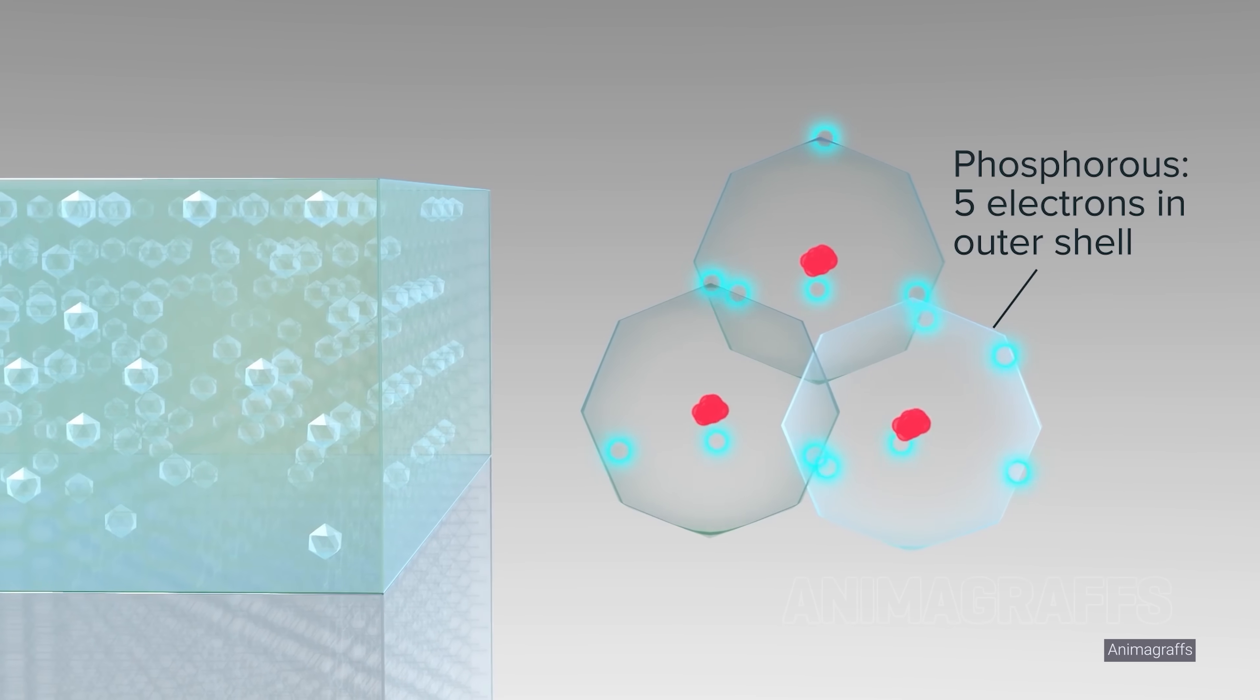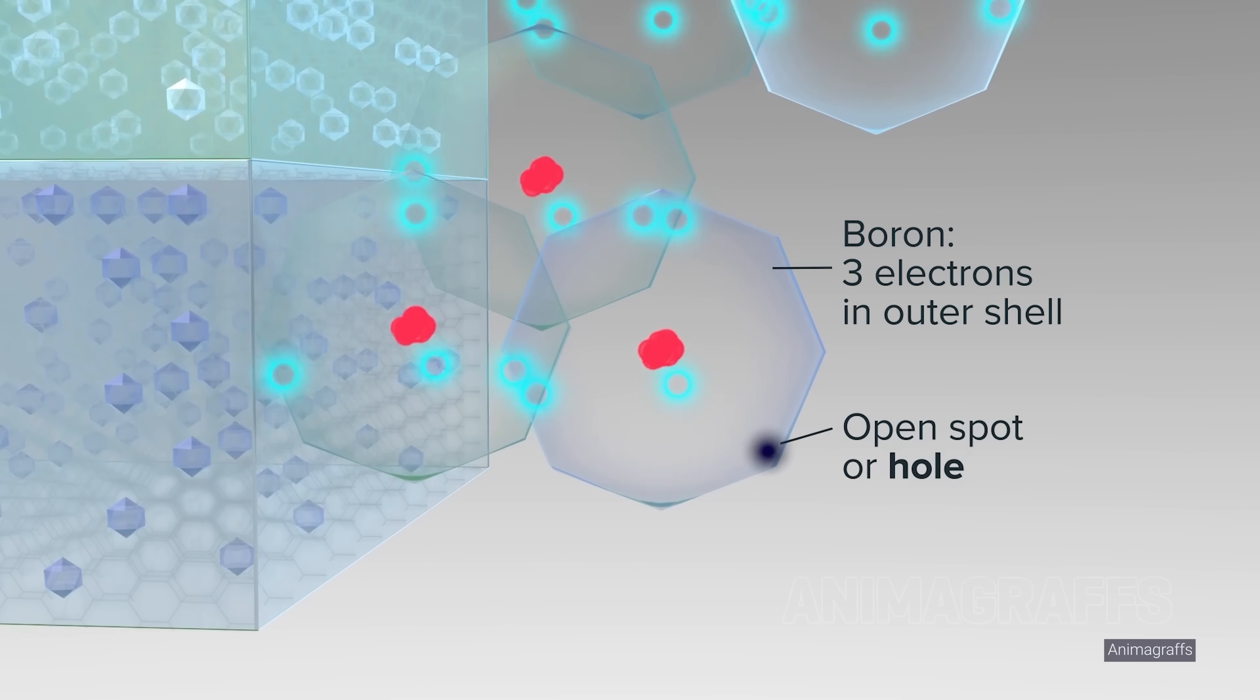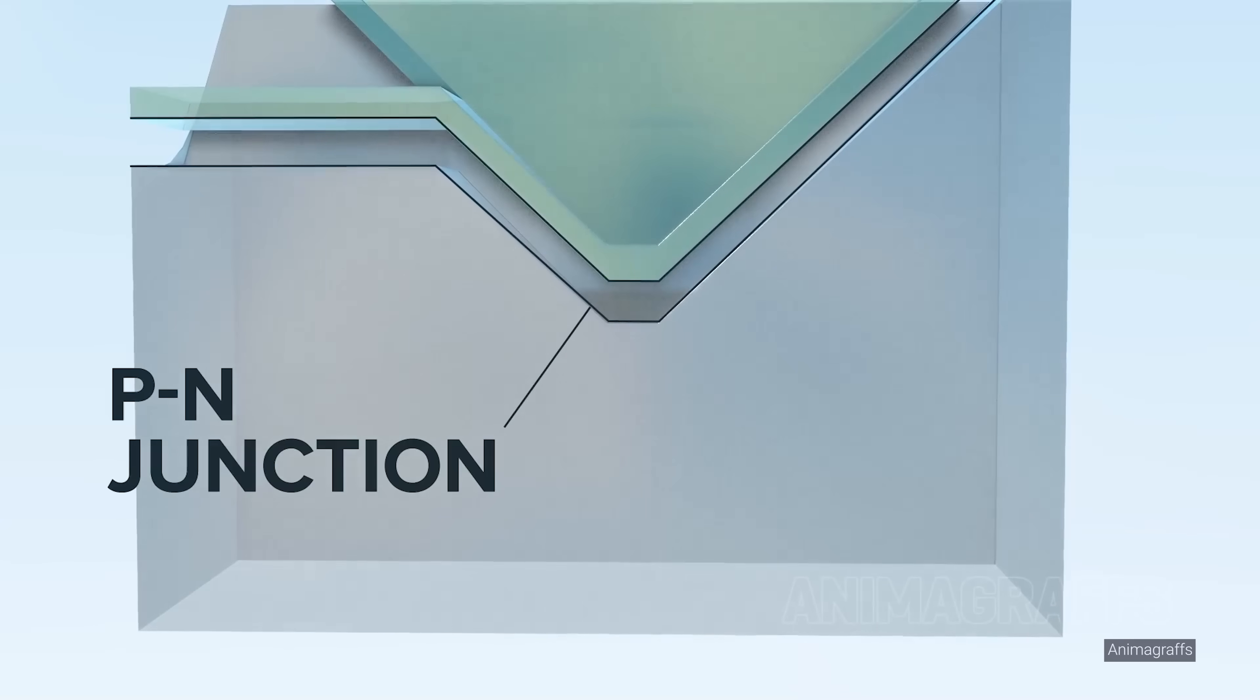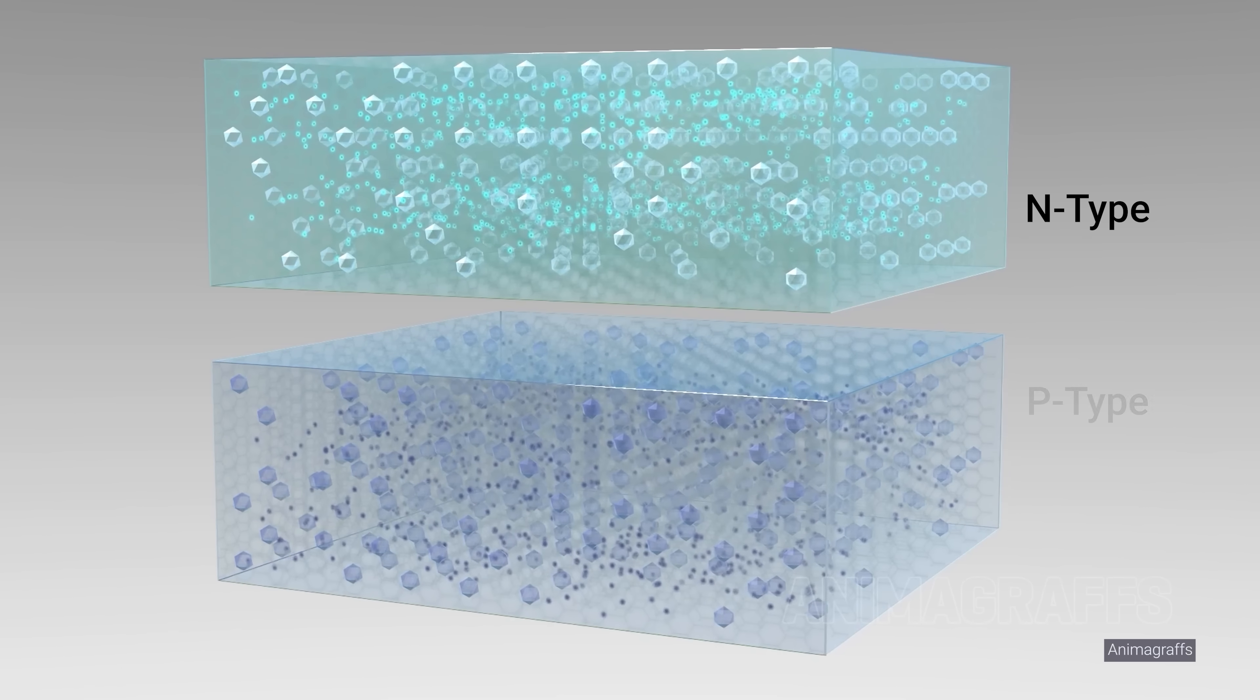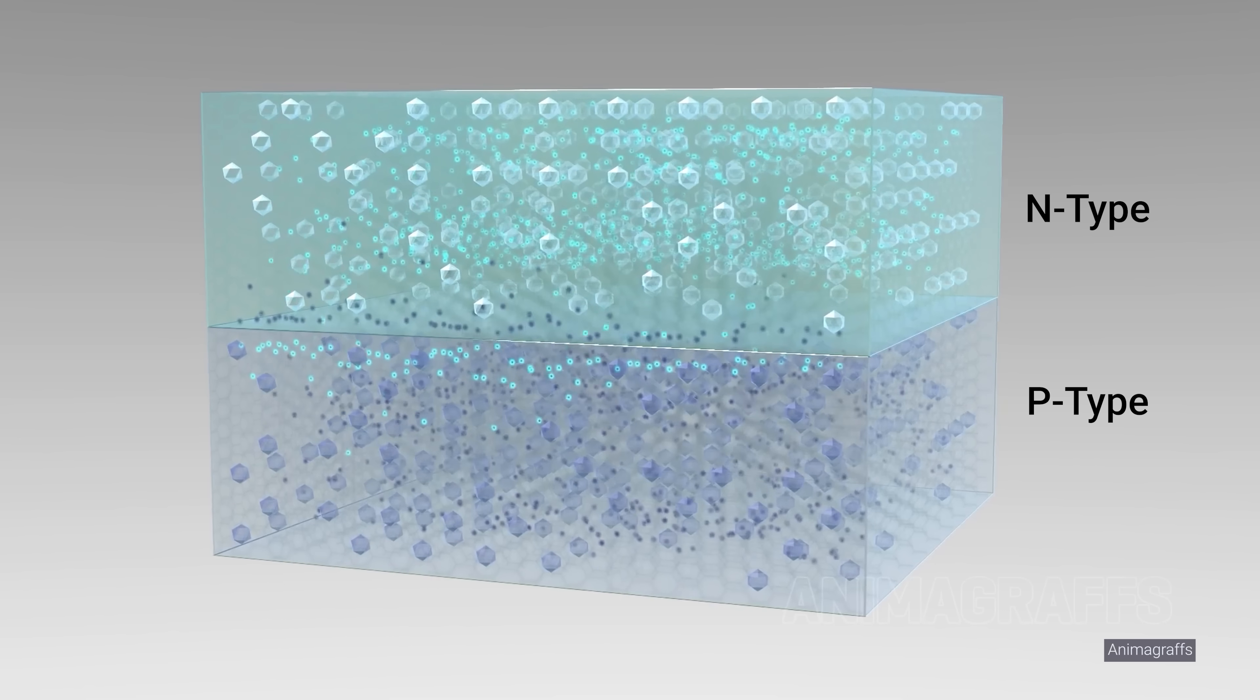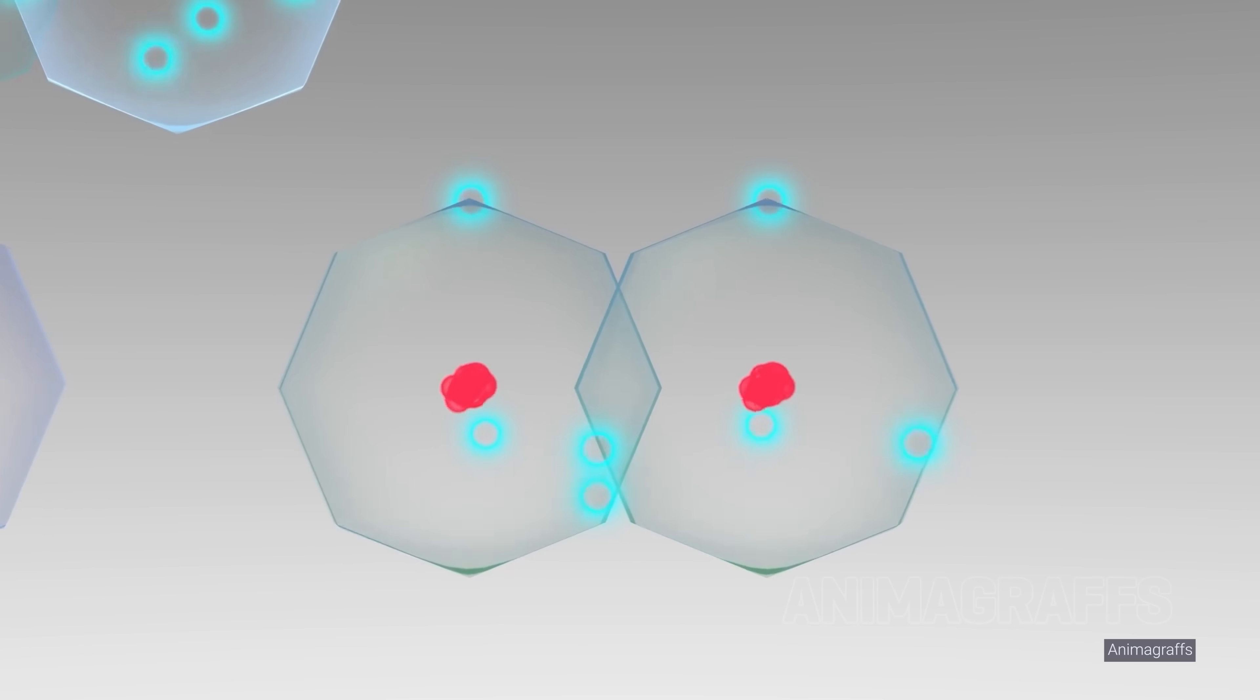But each layer is modified or doped with tiny amounts of different elements to create different electrical charges. The portion that contains a higher concentration of free negatively charged electrons is called the N-type region, and the side that contains more positively charged holes, or missing electrons, is known as the P-type region. The boundary between these two layers is known as the P-N junction.